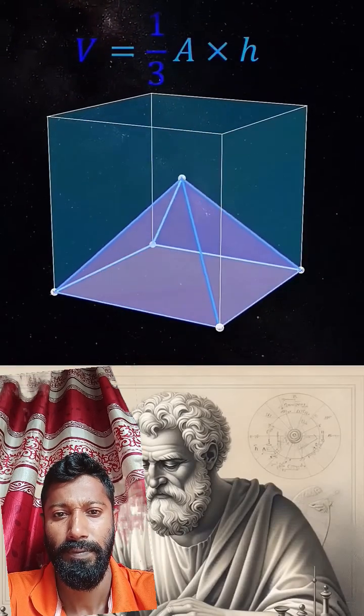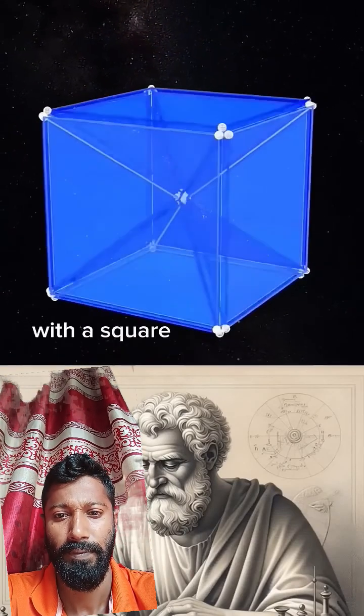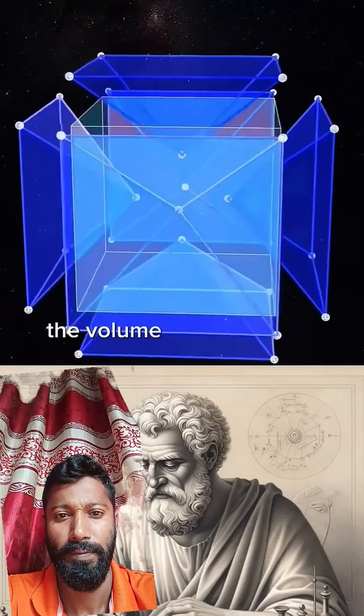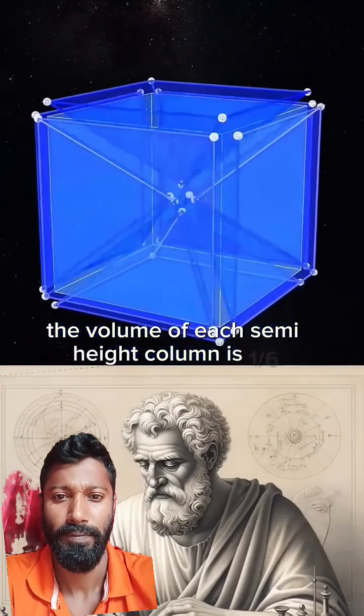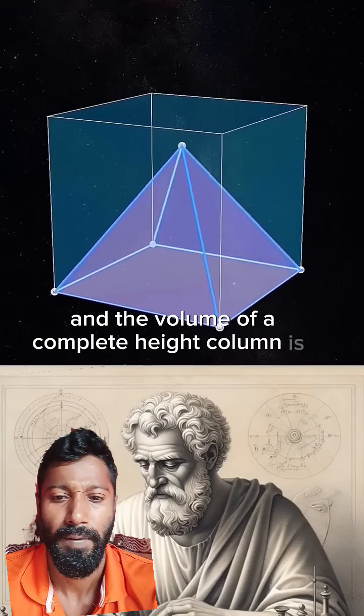Divide a unit cube into six completely identical pyramids with a square bottom. In this way, the volume of each half-height pyramid is one-sixth, and the volume of a complete height pyramid is one-third.